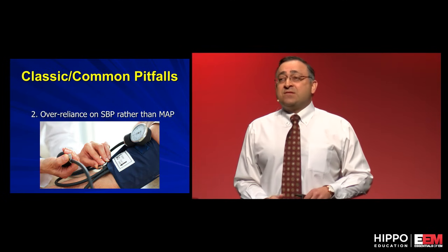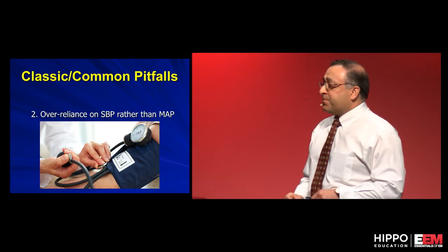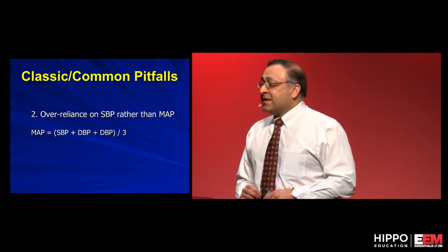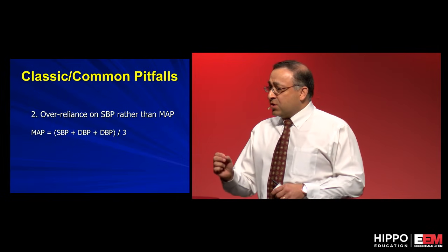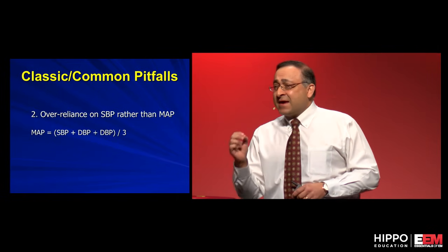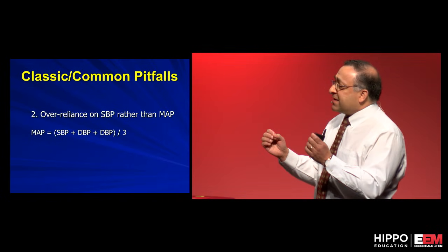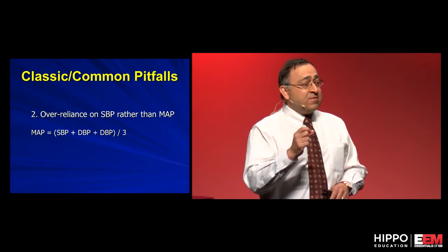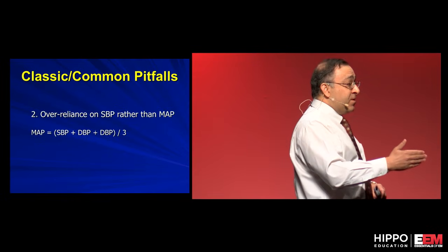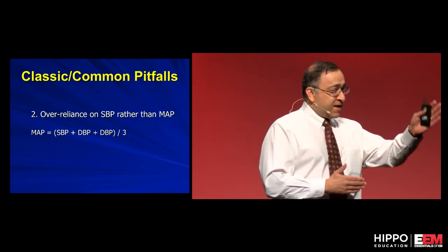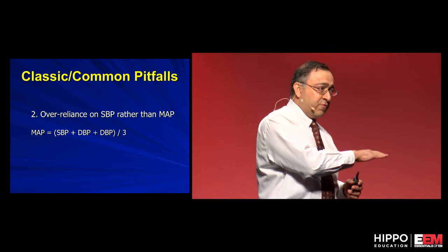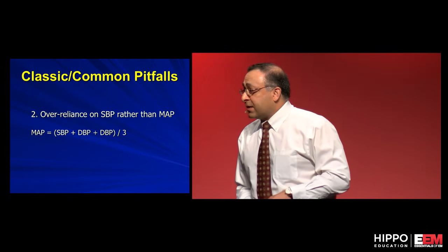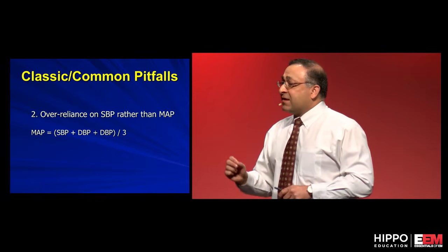Number two: over-reliance on systolic blood pressure instead of the MAP. It's important to remember that we live two-thirds of our life in diastole. So diastolic blood pressure is actually more important than systolic. When you calculate the MAP, the diastolic blood pressure gets double credit. The formula is: systolic plus diastolic plus diastolic, averaged over three. Diastolic is twice as important as systolic blood pressure.